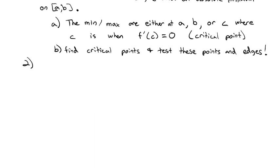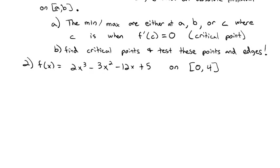Let's take a look at an example. Say f(x) equals 2x cubed minus 3x squared minus 12x plus 5, and we're looking on the interval from 0 to 4 to find the absolute minimum and absolute maximum in that range. First, we have to find the critical points — that's when the derivative equals 0, because the function might level off and come back down.